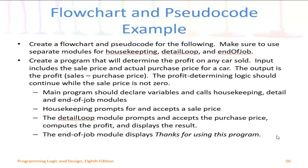That zero is called a sentinel value and indicates that the user wants to end the program. Some requirements: this program must have a main flowchart, a main logic. But in addition, since this chapter is partially on modularizing your programs, we do break up the logic into three additional modules for housekeeping, detail loop, and end of job module.